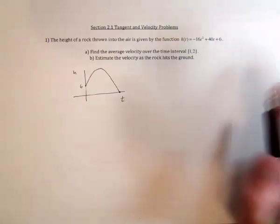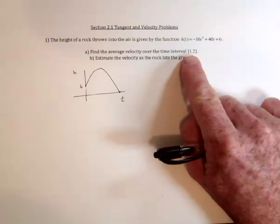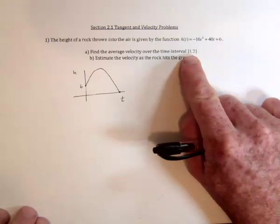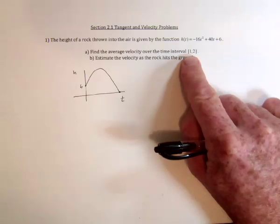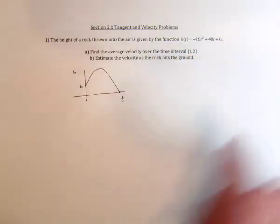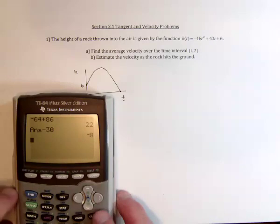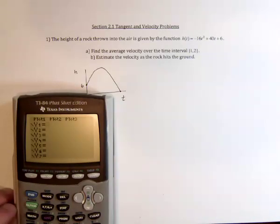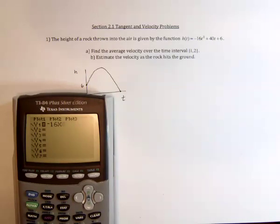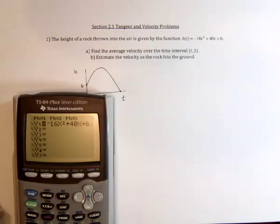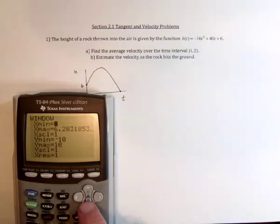So then we've got this time interval given. It says when you go from one second to two seconds, on average, how fast was the rock going? So I could get a little more accurate graph rather than my sketch. So negative 16, I'll use x squared, plus 40x, plus 6. And then for the window, x is time, so perhaps 0 to 10 seconds. And the y value stands for the height.